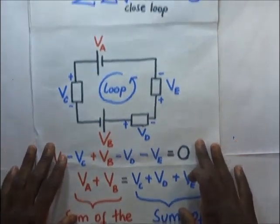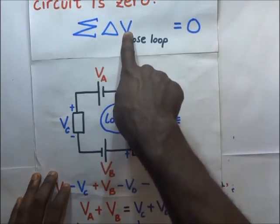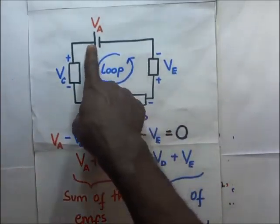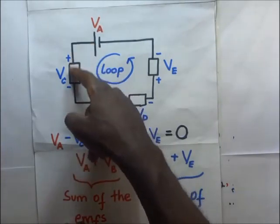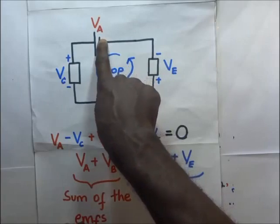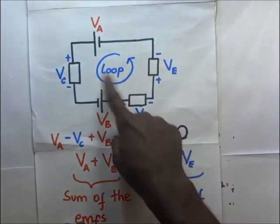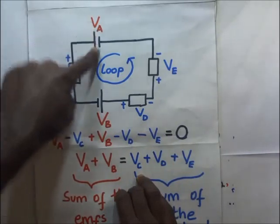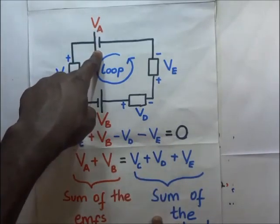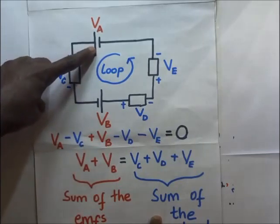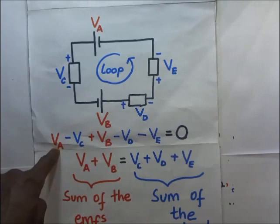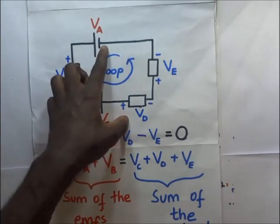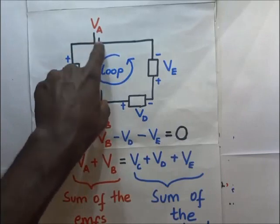In our previous assertion, we said that the sum of the potential drops — the sum of the PDs — within a closed loop is equal to zero. This here is a closed loop: when current gets out of this cell, it moves across and comes back, from the positive terminal back to the negative terminal. So this is a closed loop, and all the voltages within this loop must sum to zero. We start with the voltage across cell A, which will be positive, because the loop is in the same direction as the flow of current within the cell — from negative through the cell to the positive side.